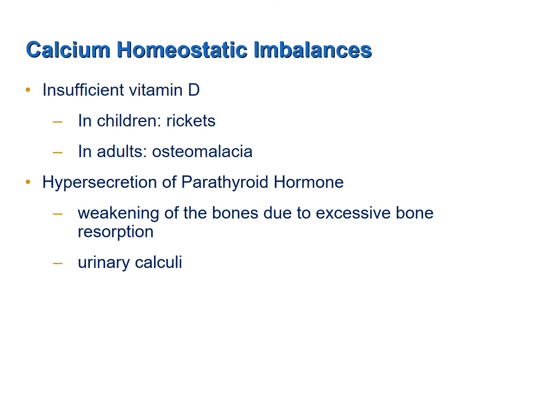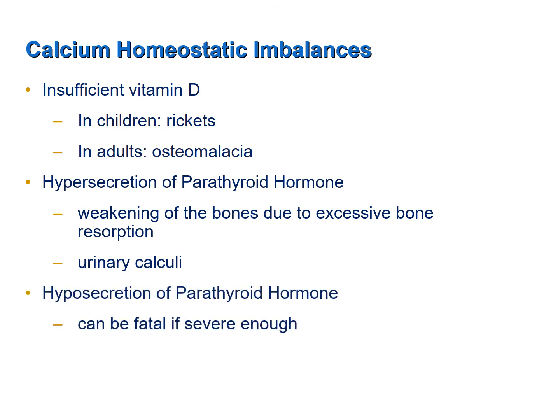Hypersecretion of parathyroid hormone leads to excessive bone resorption by osteoclasts, which weakens the bones and makes them more susceptible to fracture. With such a large mobilization of calcium from bone into the blood, there is also a lot of calcium being excreted in the urine, which can cause the formation of urinary calculi, or what you know as kidney stones. Hyposecretion of parathyroid hormone can be fatal if severe enough — if an autoimmune disease completely destroys the parathyroid glands, or if the parathyroid glands are accidentally removed along with the thyroid, that will cause death within days.